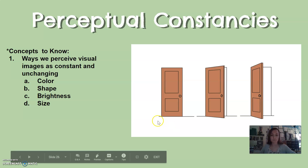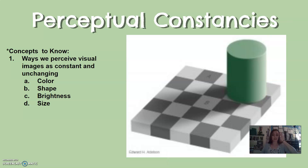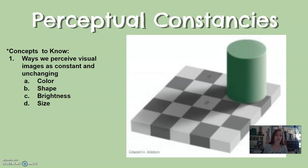Here's another example: if you look at square A and square B, they probably appear to be different colors, but in fact they are the same color. You can put your finger or a piece of paper over the space between A and B and notice they are actually the same color. Because our brain understands shadows and lightness, we perceive something in a shadow as darker — so our brain perceives them as different colors when in actuality they are not.